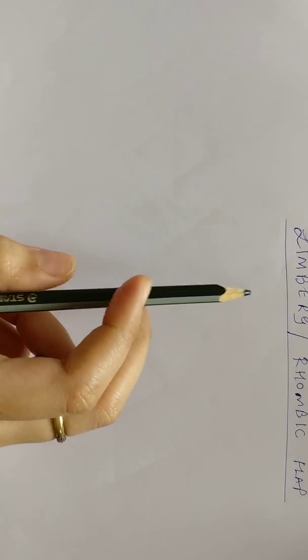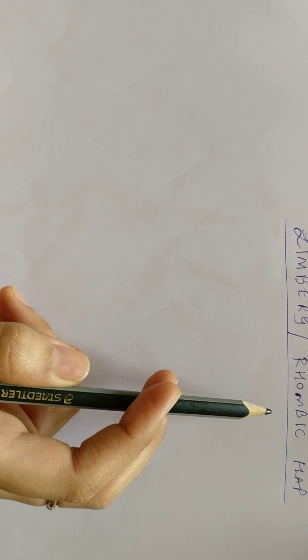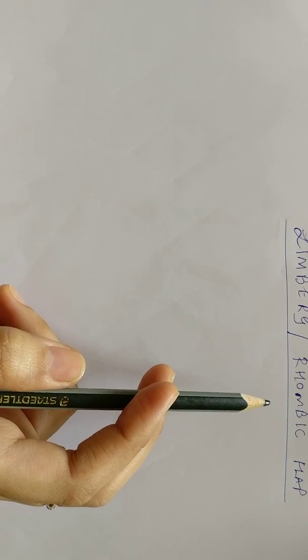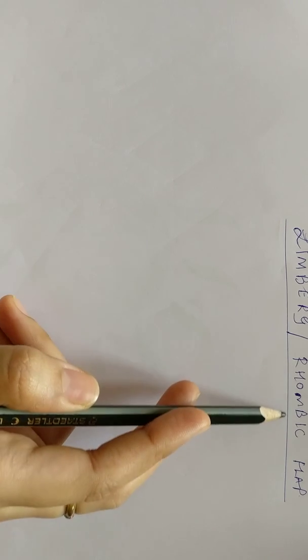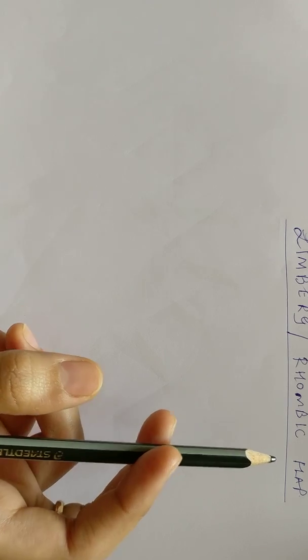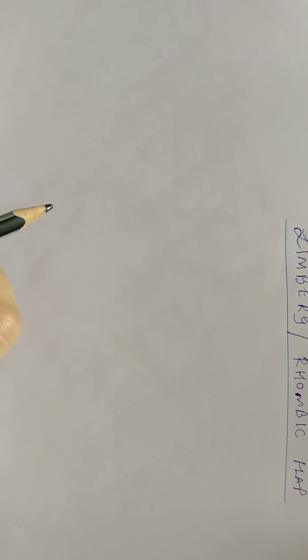The third flap which is most commonly used is a Limburg flap or a rhombic flap, sometimes also called a rhomboid flap, but essentially by geometrical definition it's a rhombic flap. This flap is most commonly used in the face and is also used for closure of a pilonidal sinus.